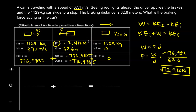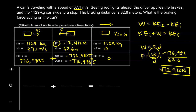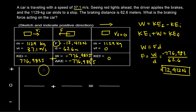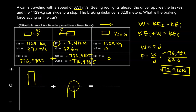To summarize: we found the change in kinetic energy, which equals the work done. Then using Work = Force × displacement, we solved for force. It is negative because the braking force acts to the left and we defined right as positive. A bar graph illustrates this conceptually: we start with kinetic energy, negative work is done by the brakes, and we end with zero kinetic energy.